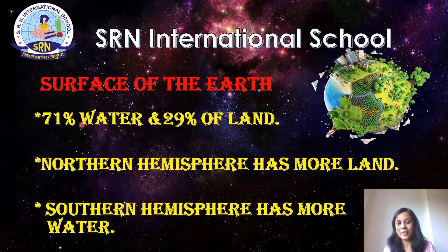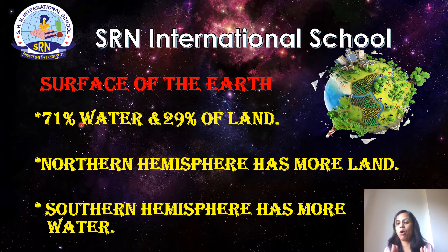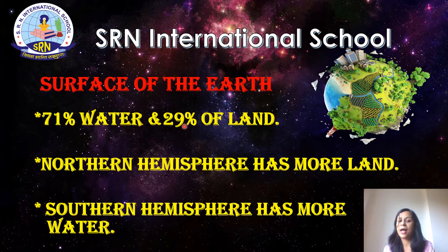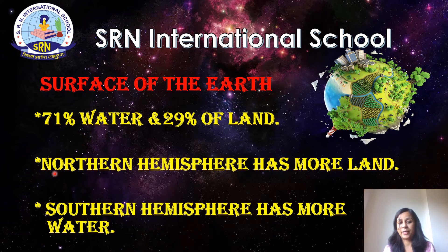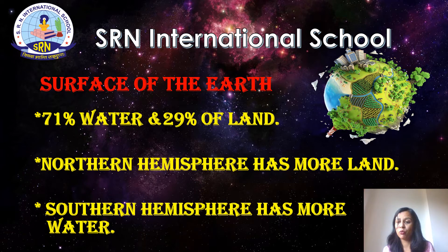When we clearly look at the world map or the globe, we get to know that a major portion of our earth is made up of water. On looking at the map carefully, we get to know that 71% of the earth's portion is made up of water and 29% is made up of land. This supports the fact that the northern hemisphere has more land, and the southern hemisphere has more water.